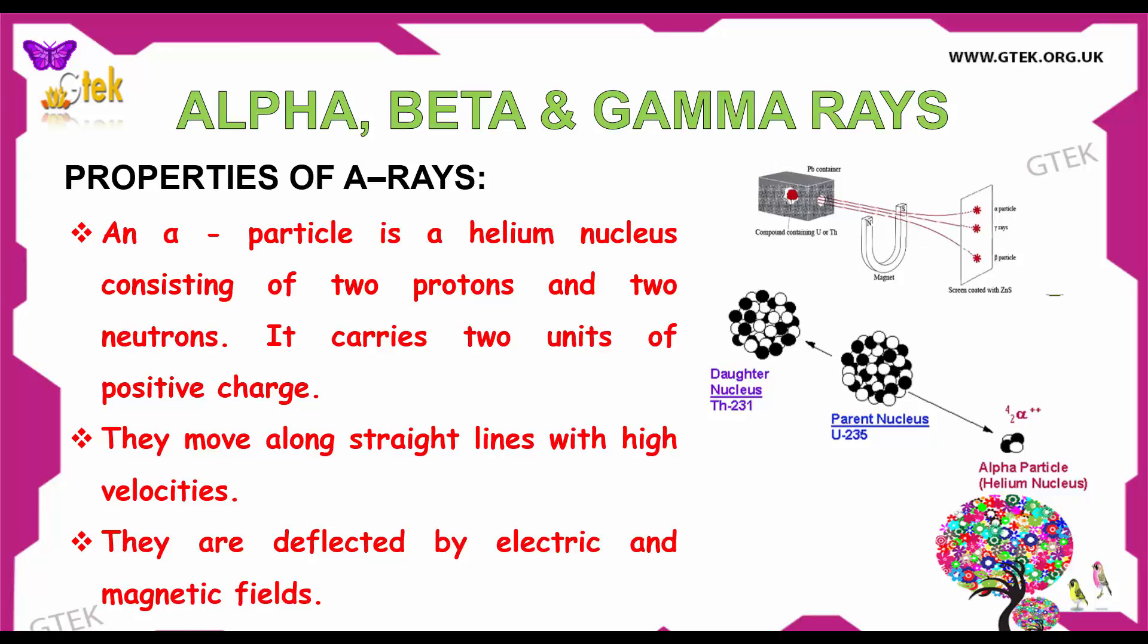Now let us see about the properties of alpha rays. An alpha particle is a helium nucleus consisting of two protons and two neutrons. It carries two units of positive charge. They move along straight lines with high velocity. They are deflected by electric and magnetic fields.